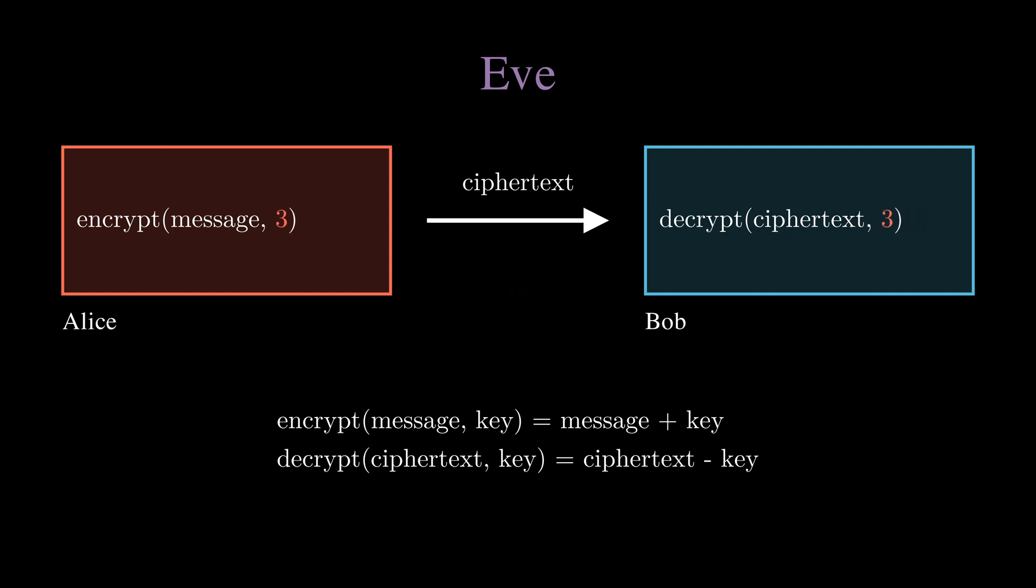Now, as an example, if Alice wants to send Bob her age 20, Alice uses the encrypt function, which gives an output of 23, and only this ciphertext 23 is given to Bob. Bob then uses the decrypt function, which gives back an output of 20.